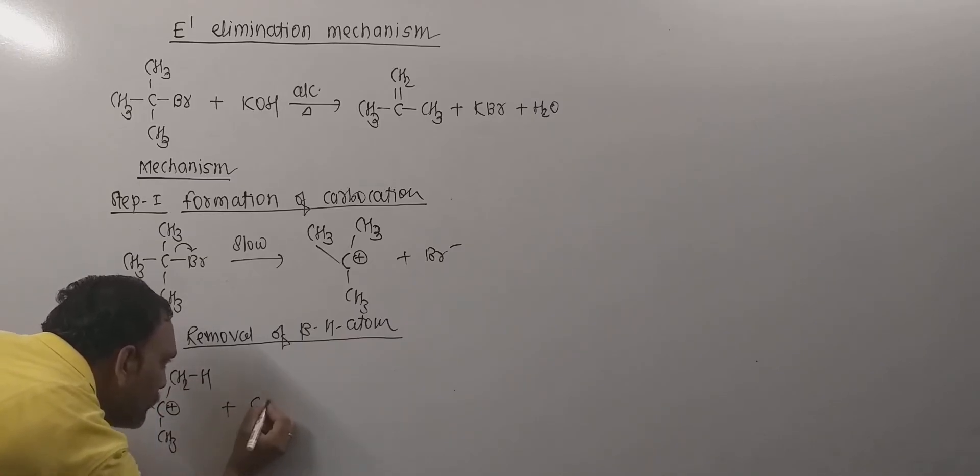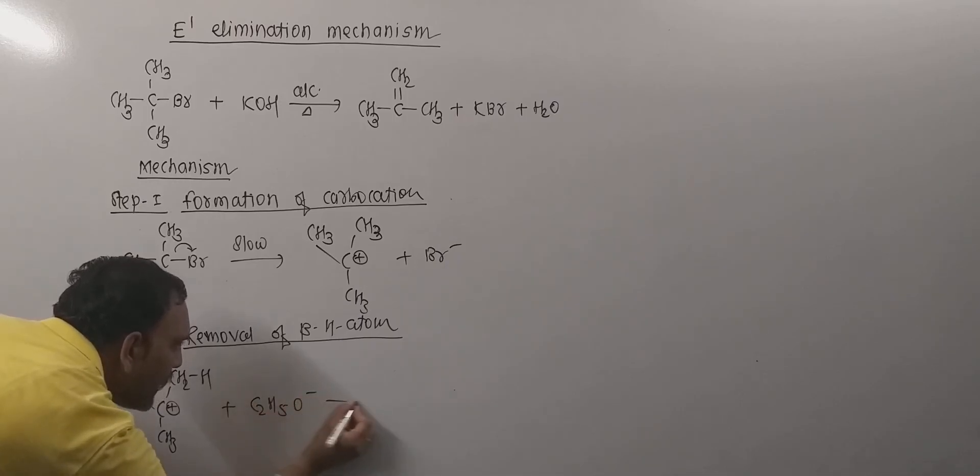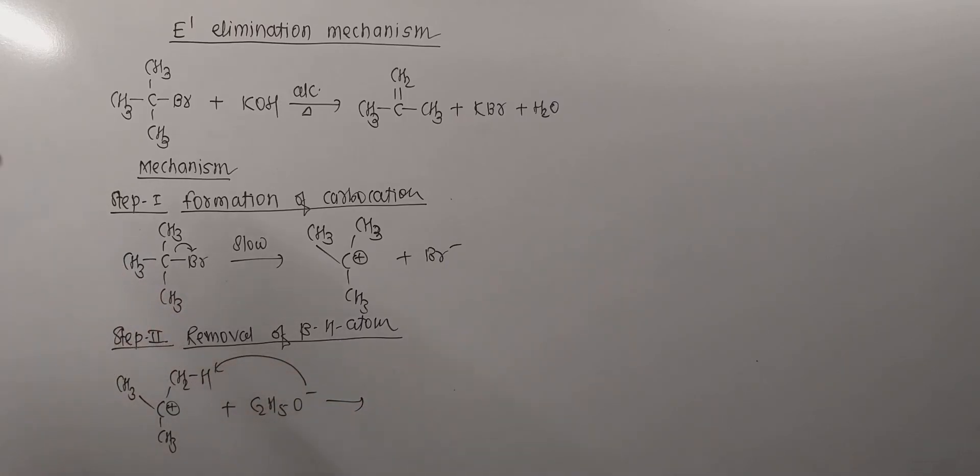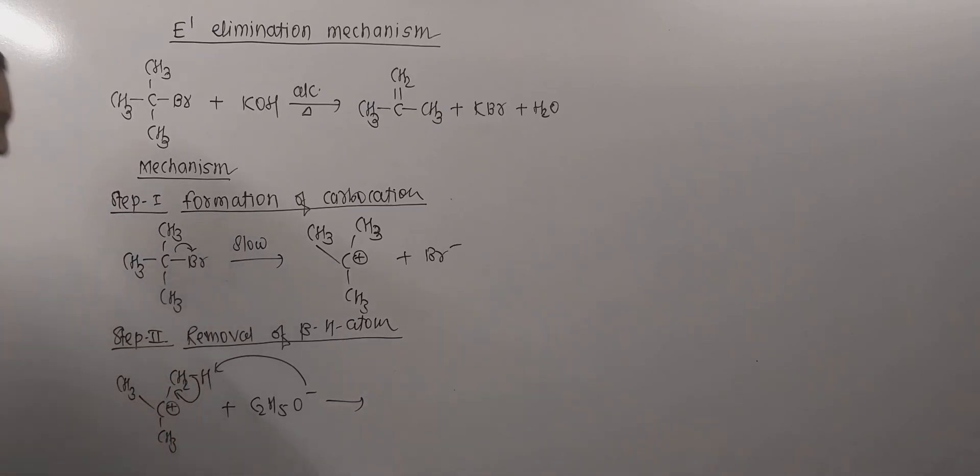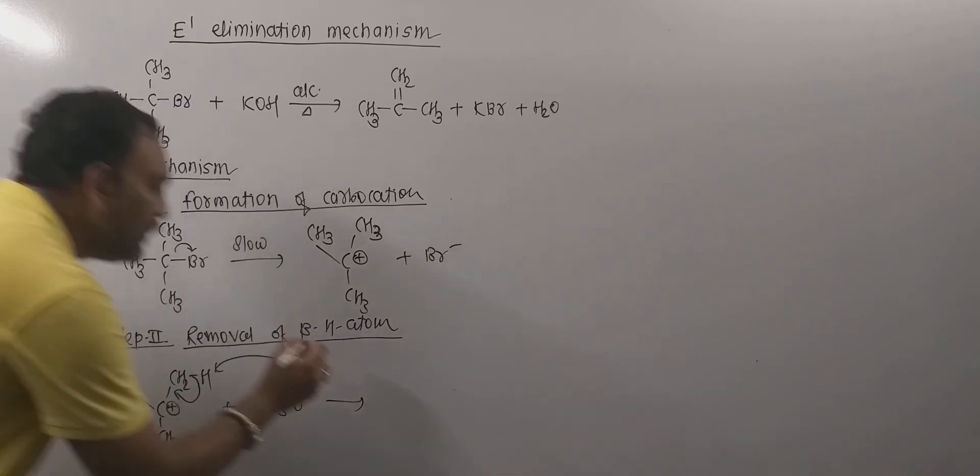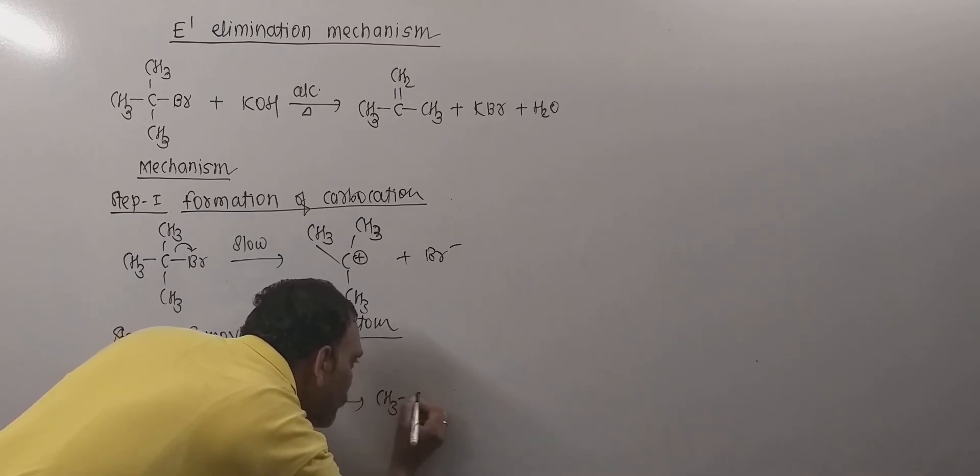This carbocation can be given as tert-butyl cation, and from this, the beta hydrogen is readily removed by our base. This electron pair can be set as, since carbon is more electronegative, it holds the shared electron pair.